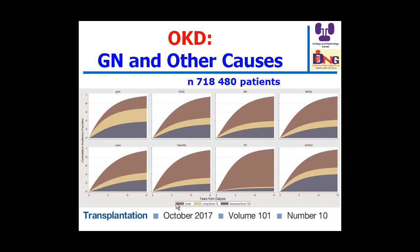The key message from this figure is that the color reflecting patients who died on dialysis is very large for diabetic patients, while the transplantation sector is small. So although diabetes is the leading cause of end-stage kidney disease, the majority of these patients are not transplanted.